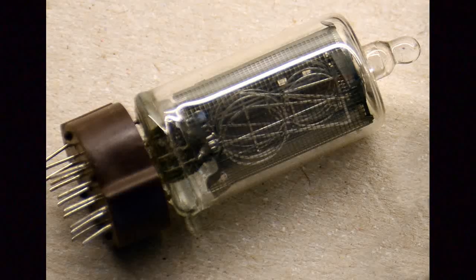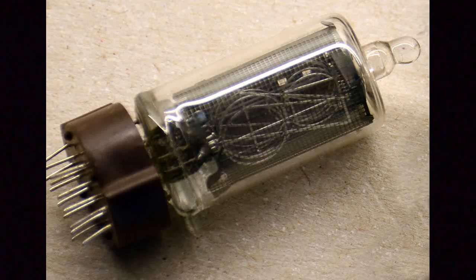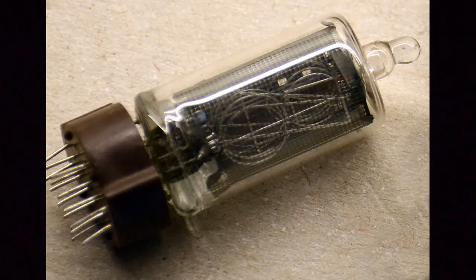The Nixie tube shown here is in fact an ITT device which contains not only numbers from 0 to 9 but also two decimal points, one to the left and one to the right of the digits.